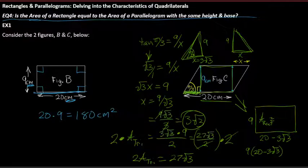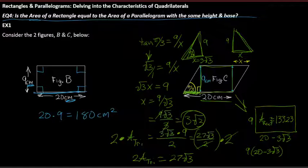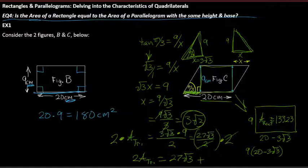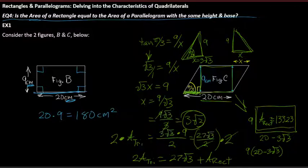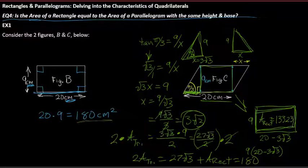The area of the inner rectangle is approximately 133.23. Adding that to 27√3 — the area of our two triangles — we get exactly 180: the exact same measurement as the rectangle.